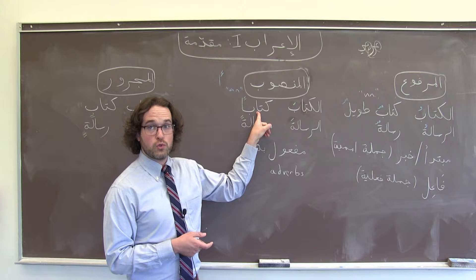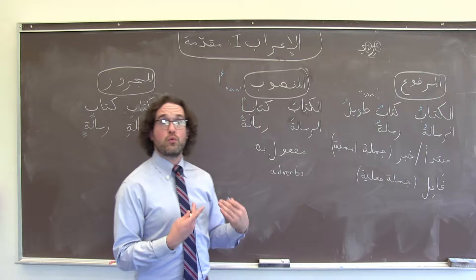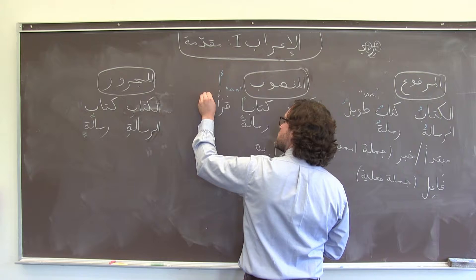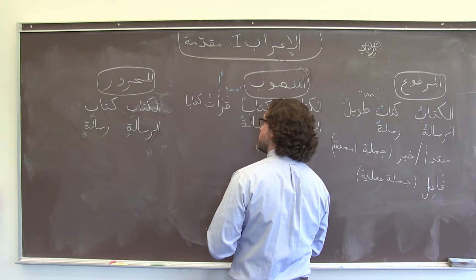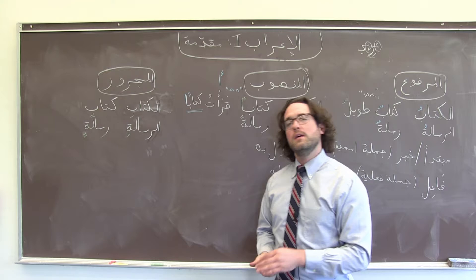One important distinction about منصوب: for most nouns that are منصوب and indefinite, we're going to add an ألف as part of the case ending. It's just decorative — we don't pronounce it as a long 'ā' sound — but if I wanted to say 'I read a book,' I would write قرأتُ كتاباً, where the 'an' ending tells me beyond a shadow of a doubt that كتاب is the direct object of the verb 'I read.'